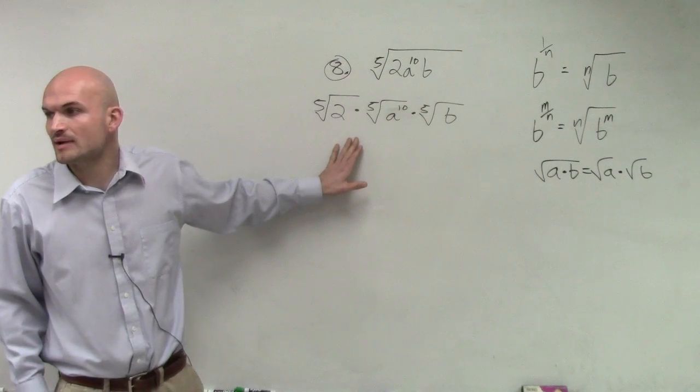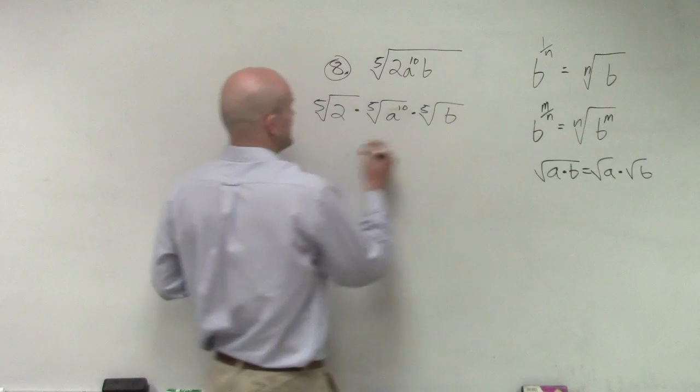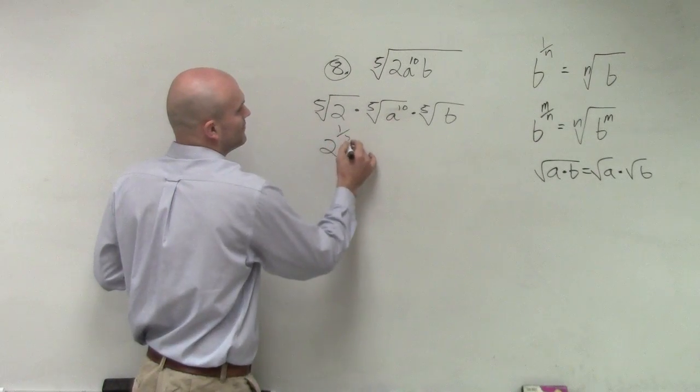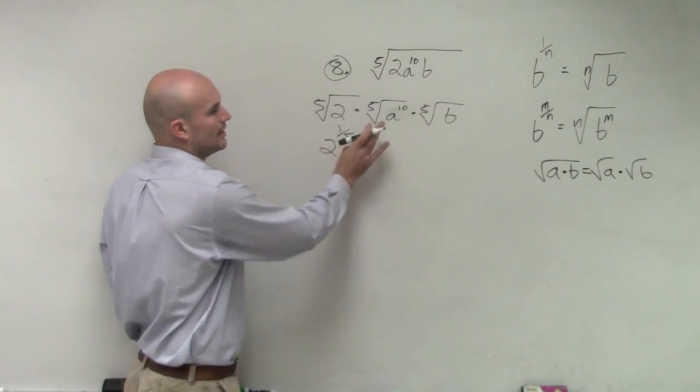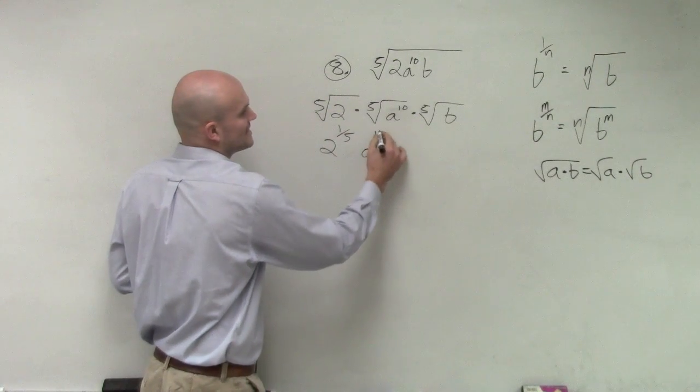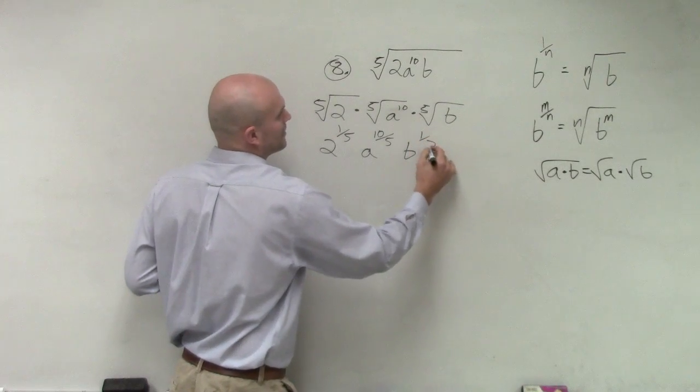Then they want us to write it into rational form. So the fifth root of b is the same thing as 2 to the 1 fifth power. Here I'm going to have a to the 10 over 5 power, and here I'll have b to the 1 fifth power.